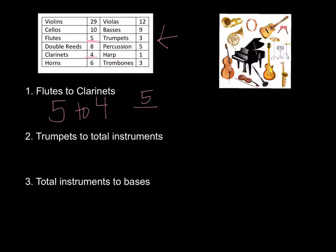Now this is one way. There are three ways to write our ratios. I could also write it as 5 to 4 as a fraction. I could also write it 5 colon 4. Those are my three ways to write it. Doesn't matter which one you pick. Now it says trumpets to total instruments.